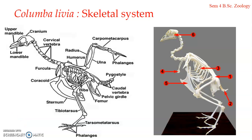Welcome back to the sessions on Columba livia. In this presentation we will be looking into the skeletal system of Columba livia. The endoskeleton of birds is quite light and completely ossified, that is bony in nature. It contains no bone marrow and hence the bones are filled with air, referred to as pneumatic bones.